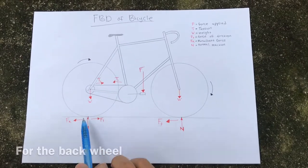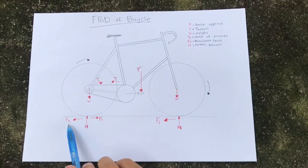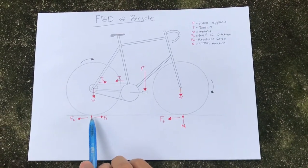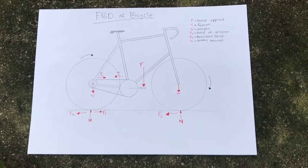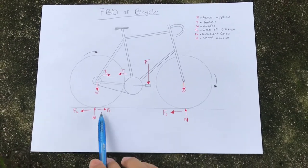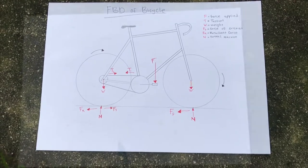As the tire spins clockwise, it exerts force backwards which is the resultant force, which makes it directed forward.